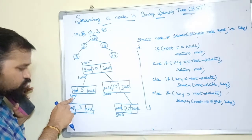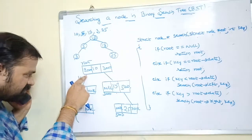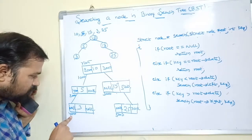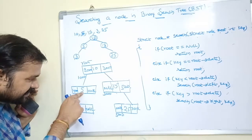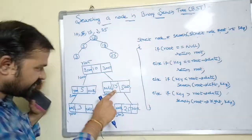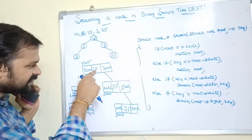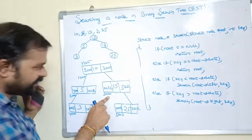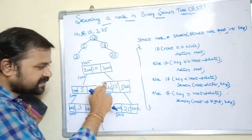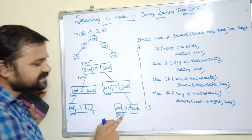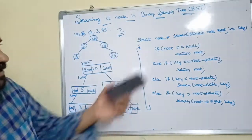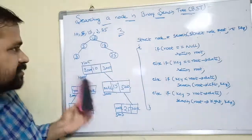Internally, the tree is stored using addresses: root node 10 is at address 1000. Its left child 5 is at 2000, stored in the left field of 1000. Node 5's left child 3 is at address 4000. Node 5 has no right child, so its right field is null. Node 15 is the right child of 10, so address 3000 is stored in 1000's right field. Node 15 has no left child; its right child 25 is at address 5000.